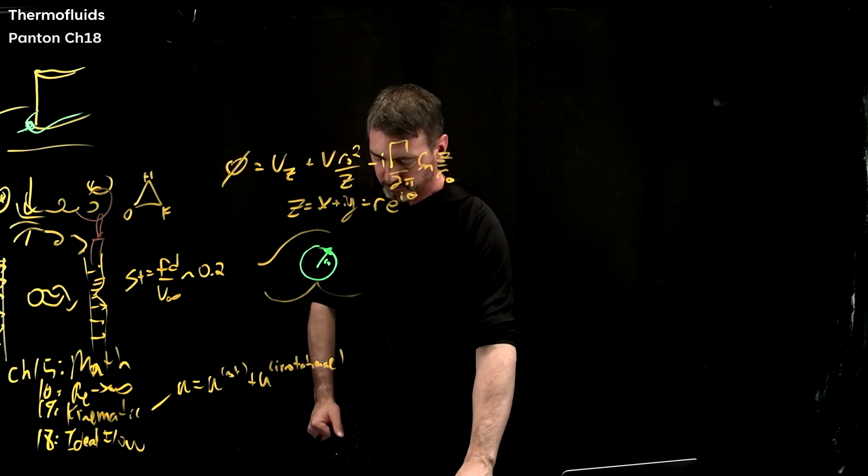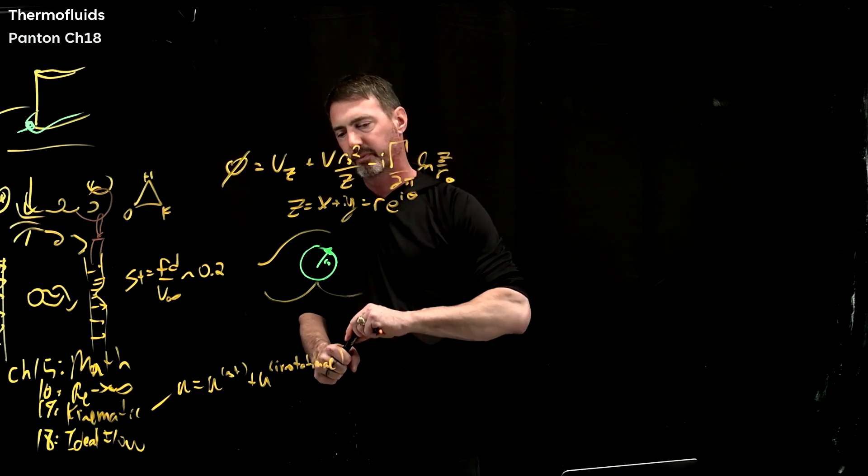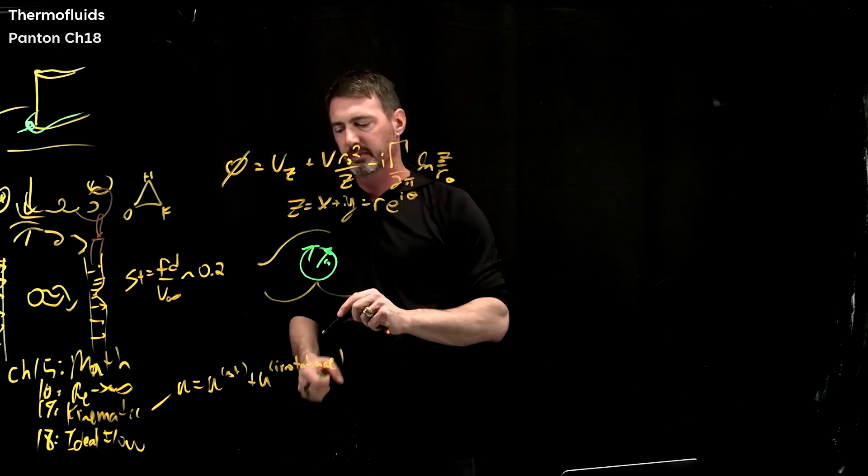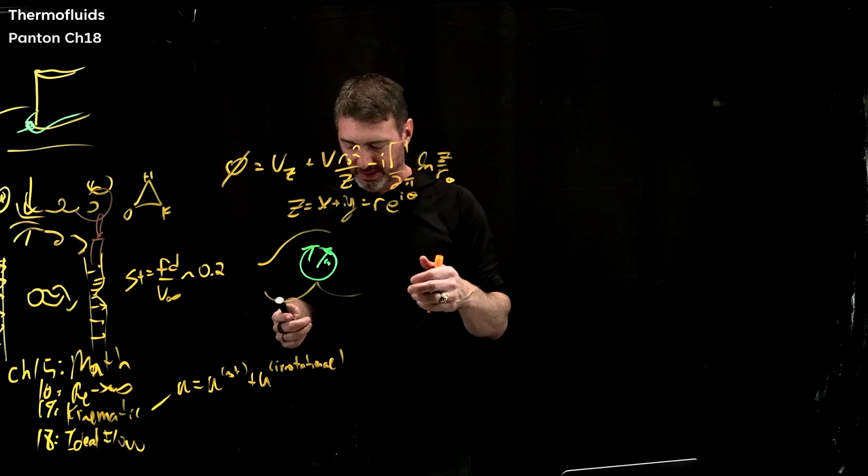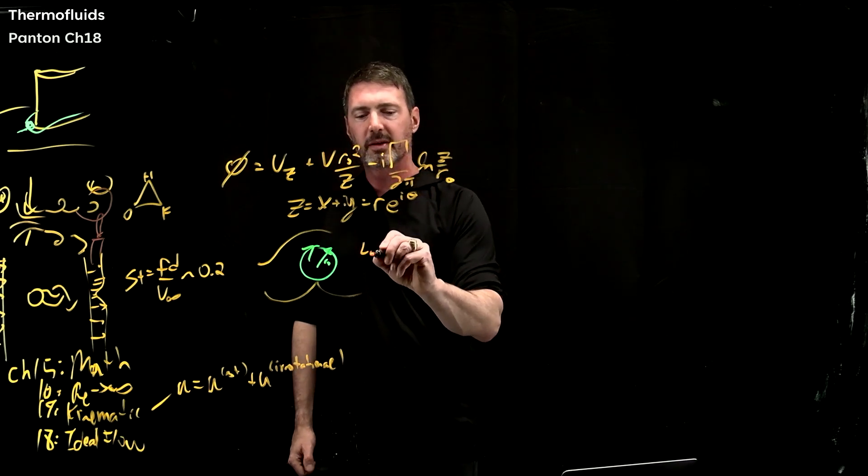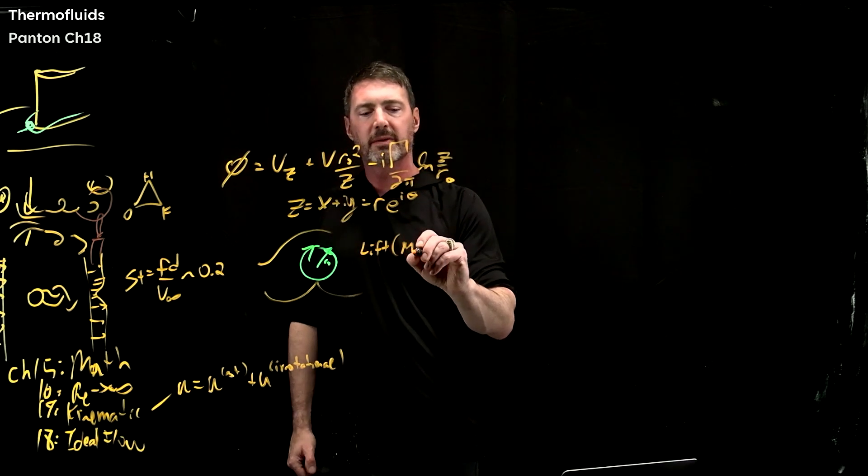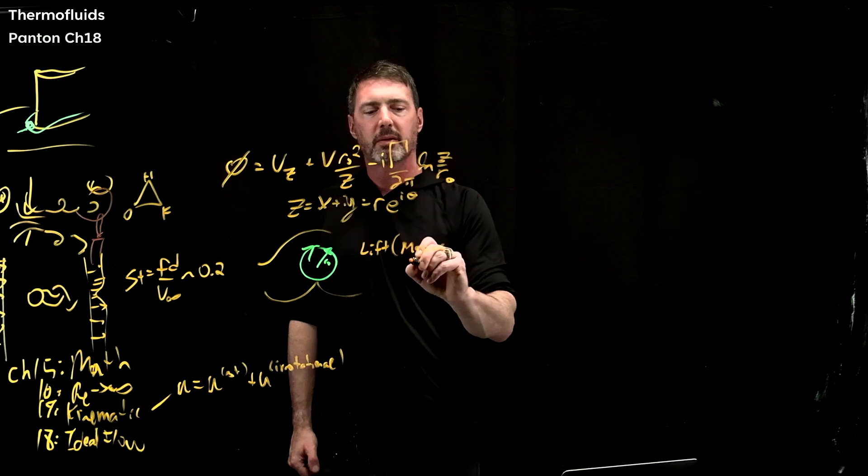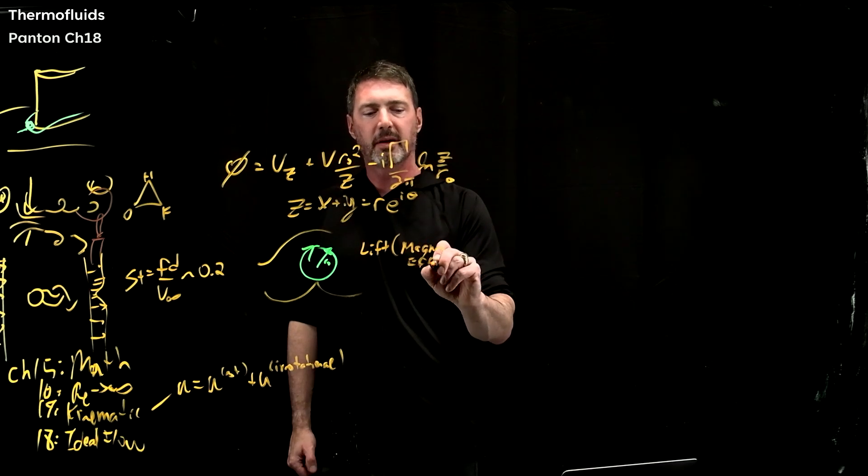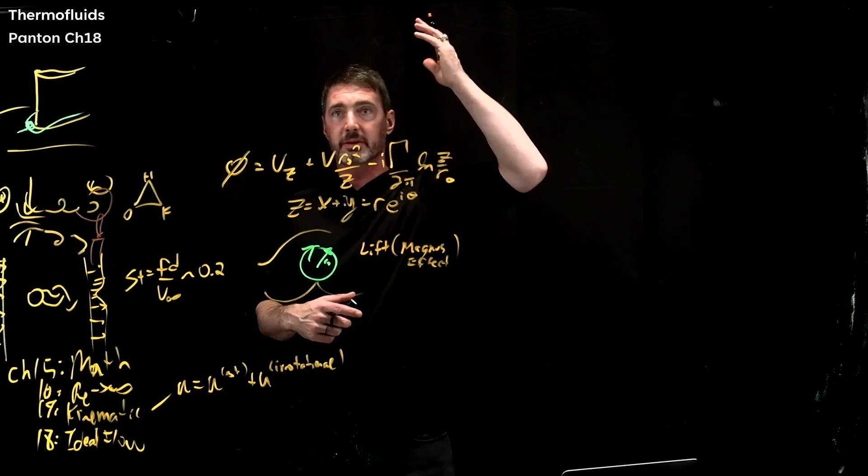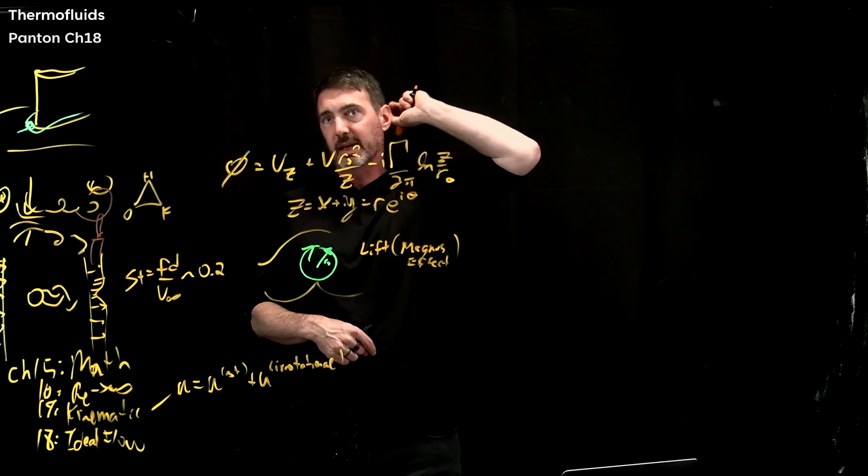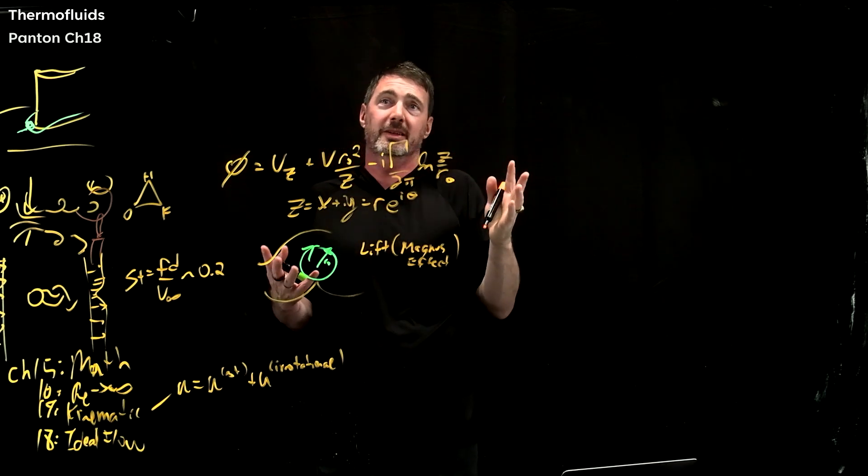And so it's rotating this direction. And a rotating cylinder actually has lift. So this has lift. And it's called the Magnus effect. In fact, there are some ships out there that take big, tall cylinders and just rotate them. And it actually helps, basically acts like a sail. It's pretty cool.